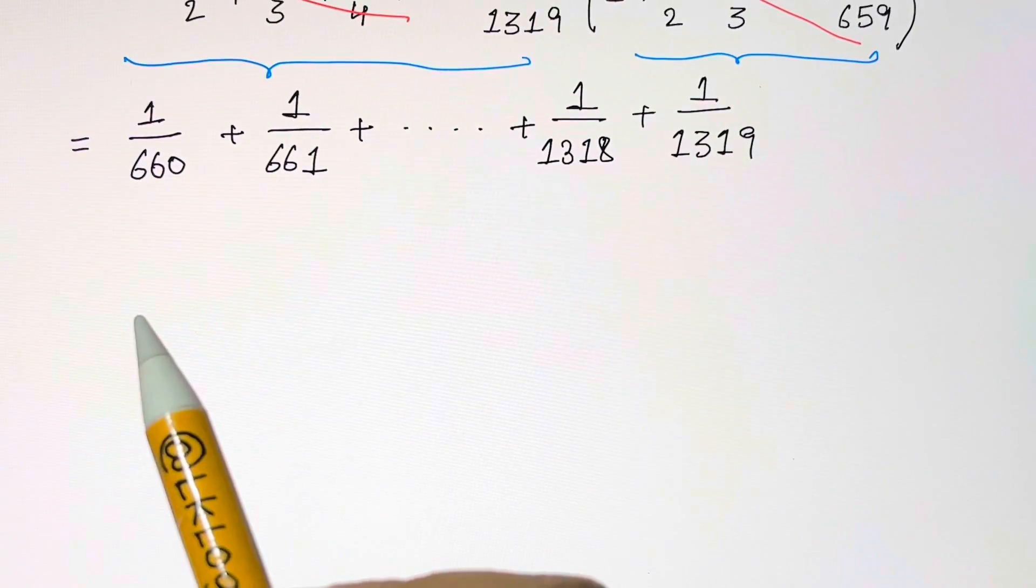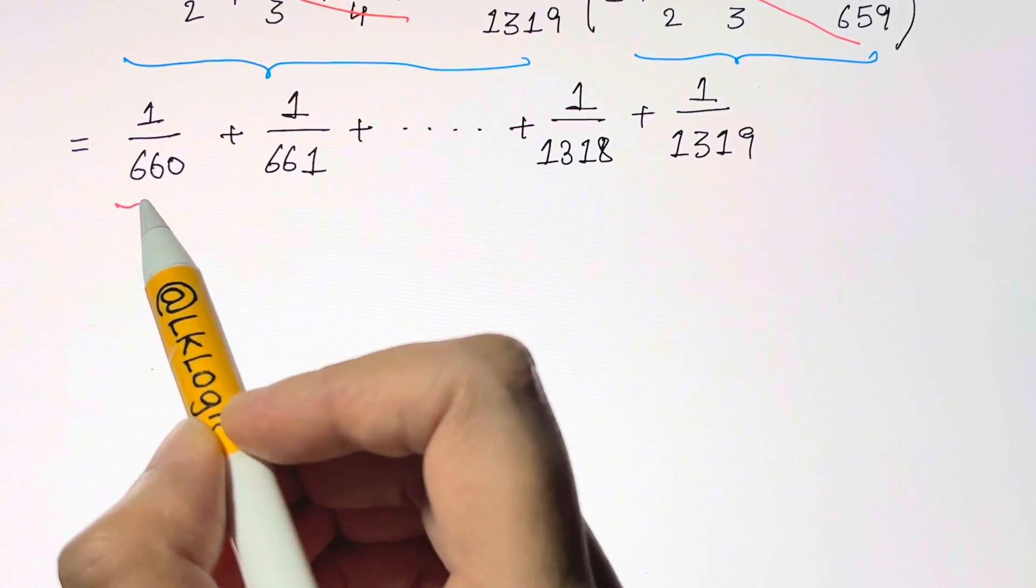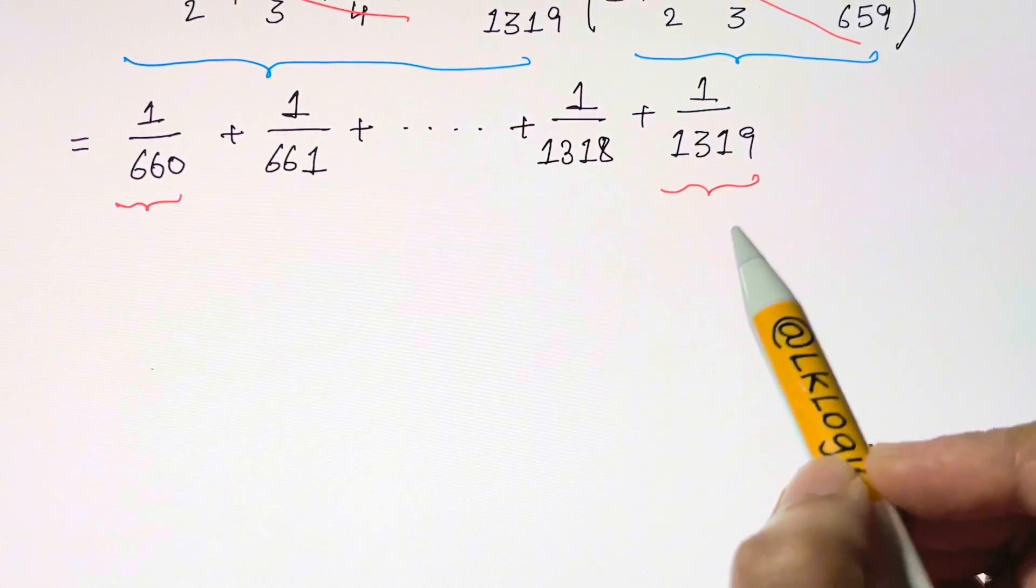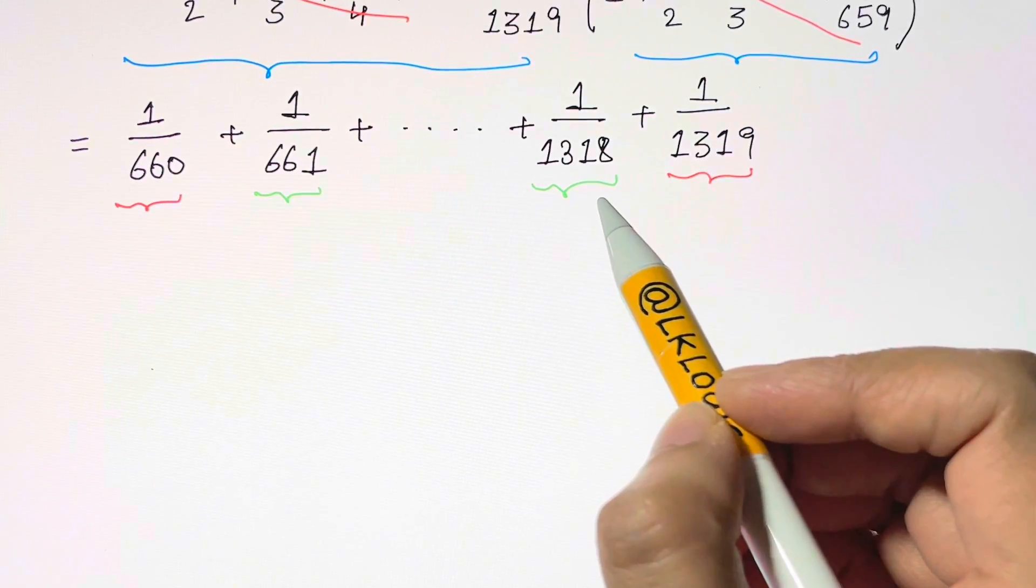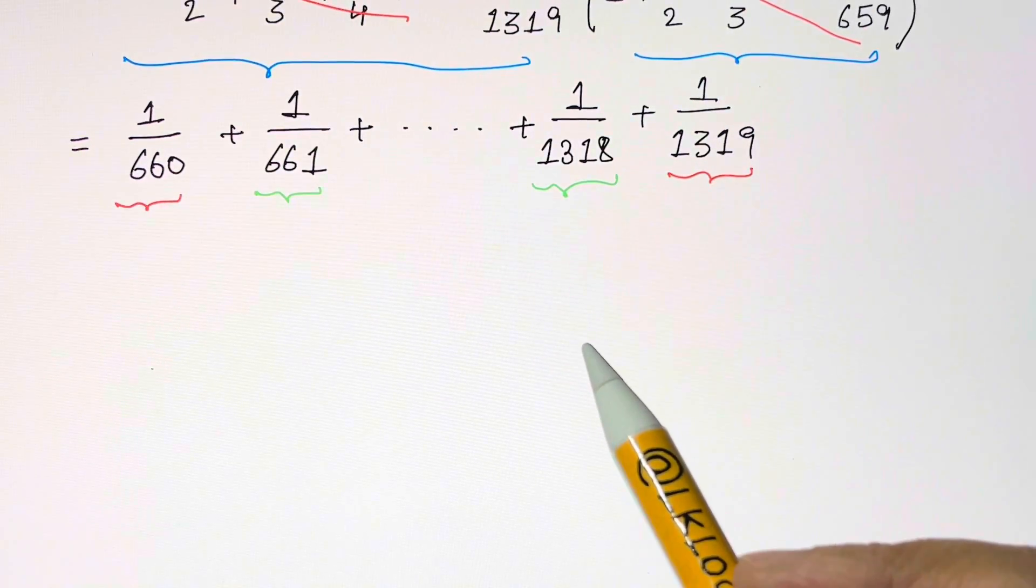However, there is a way we can tackle that, which is to consider the first and last term, the second term and second last term. They make pairs and we rearrange it this way.